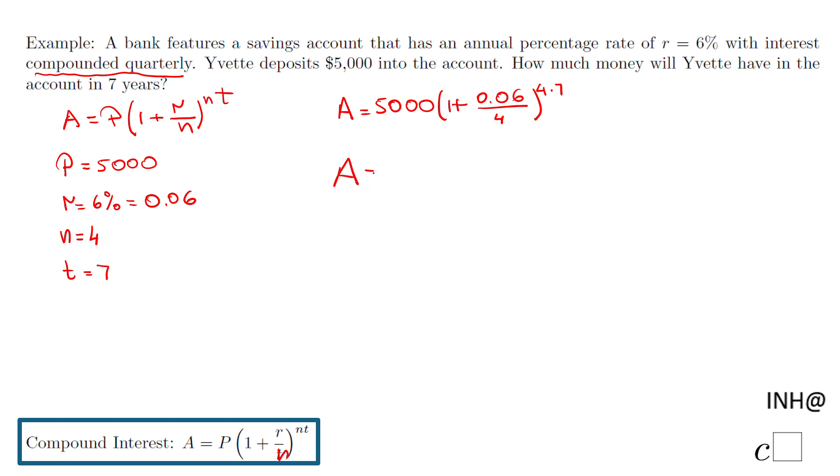$7,586.11. I'm going to round it to the nearest cent, and that's it for this example. If you enjoyed this example, don't forget to click the like button and come back on C Square for more help.